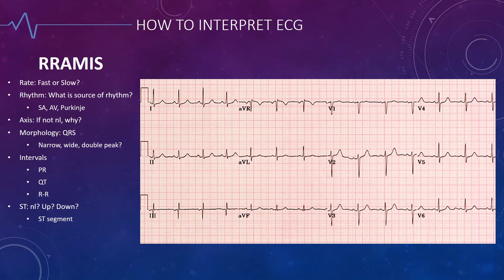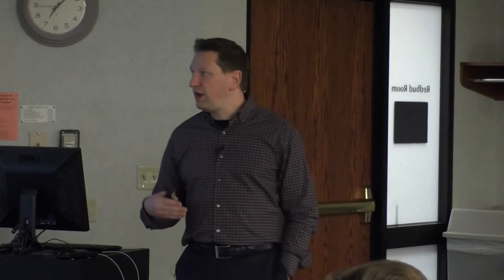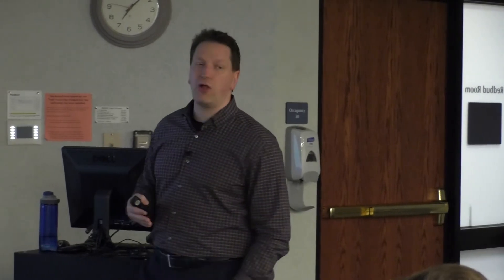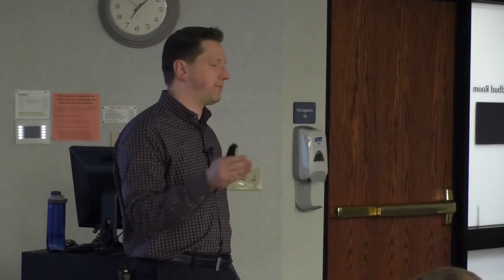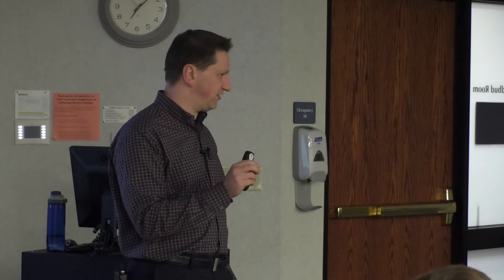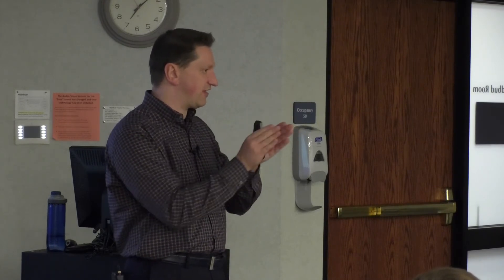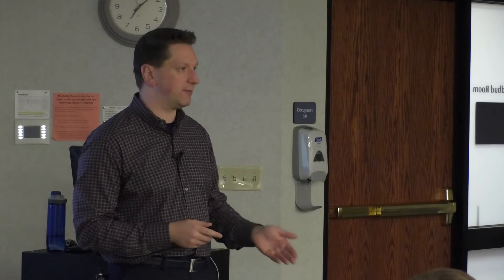Rhythm — what is the source of the rhythm? What you're looking for here is P waves. If the P waves have a fixed relationship to the QRS, the P waves are almost always the source of the QRS. When I say a fixed relationship, all I mean is a relationship in which the P waves have a very regular pattern to the QRS. It doesn't necessarily have to be in the exact same place every time, as we're going to talk about in a moment with type one heart block.